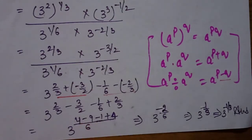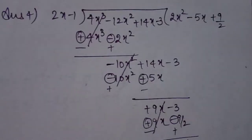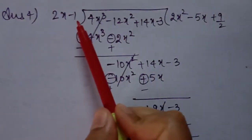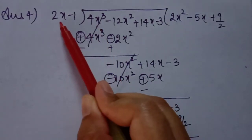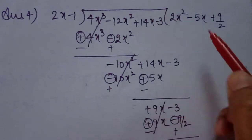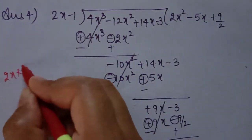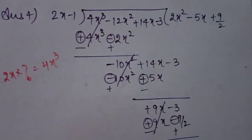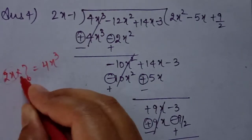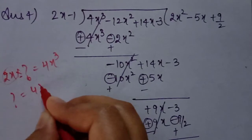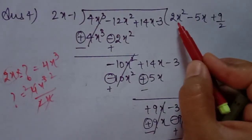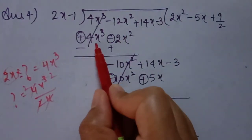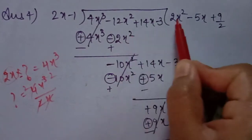Next question: by the Remainder Theorem, find the remainder when p(x) is divided by g(x) and determine whether g(x) is a factor of p(x). We solve using long division. g(x) divides p(x). The first term is 4x cubed — what do we multiply 2x by to get 4x cubed? We get 2x squared. Then multiply this by both terms of g(x): we get 4x cubed minus 2x squared.